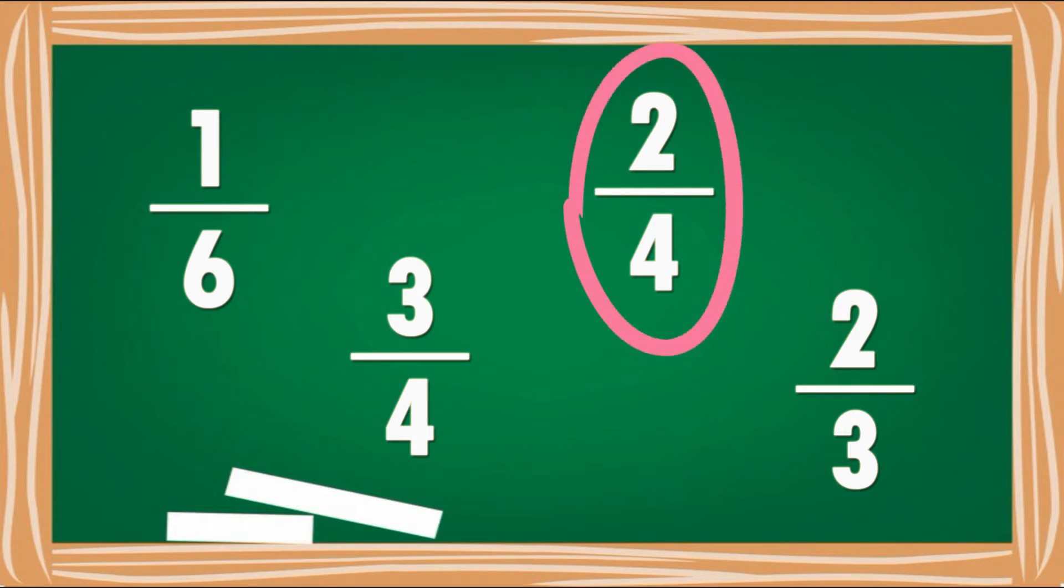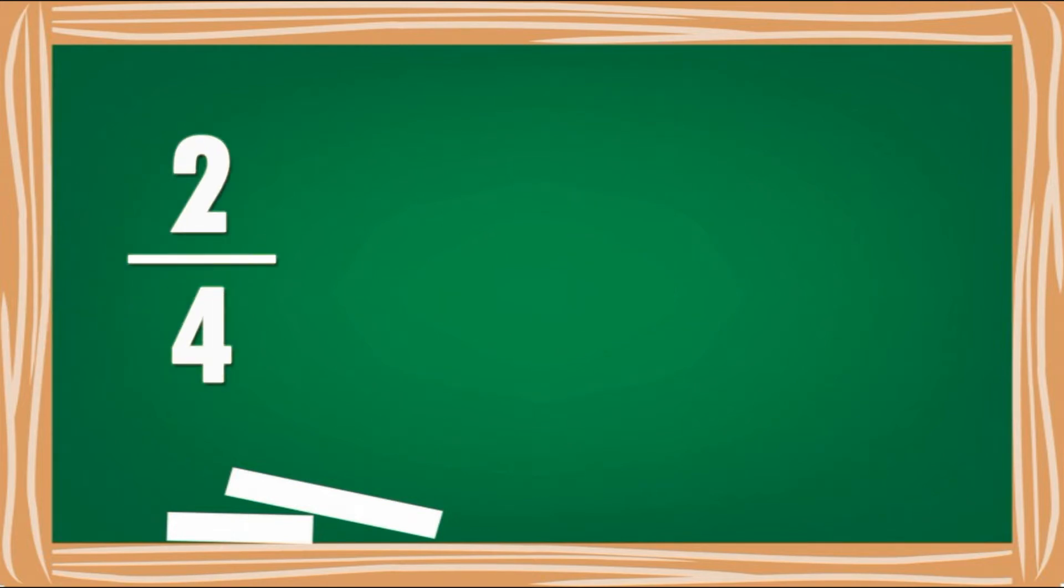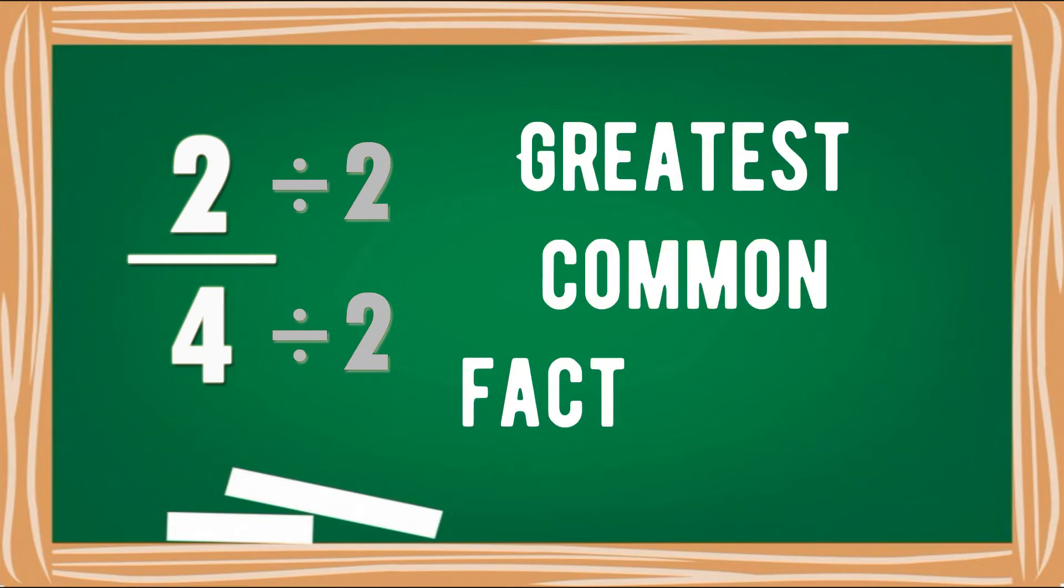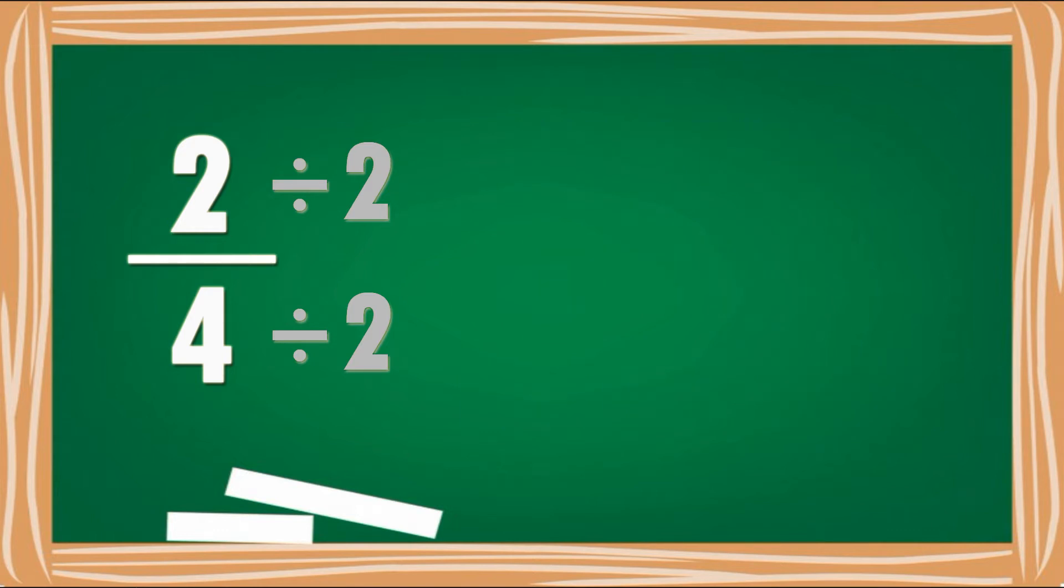That's right, two-fourths is not in the simplest form. The numerator and the denominator can still be divided by two, which is called the greatest common factor. So the simplest form of two-fourths is one-half.